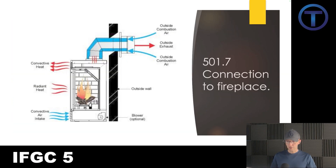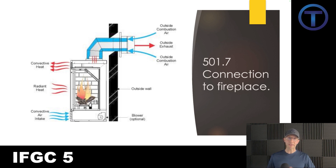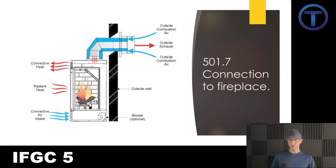501.7 refers to connections to the fireplace and gives several particulars: closures and access, connection to factory-built fireplace flue, and connection to masonry fireplace flue. The primary goal is to keep any of those gases from coming out into the room. A lot of these are direct vents that draw air in from outside and emit combustion products outside through direct vent piping, but we have to make sure fireplaces are connected correctly according to the manufacturer's recommendations.